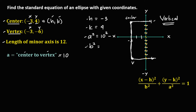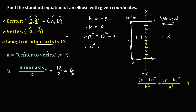To solve for b, since b represents the semi-minor axis, that's the minor axis divided by 2. The given minor axis is equal to 12, so b equals 12 over 2, which gives b equal to 6. Therefore, b squared is 6 to the power of 2.